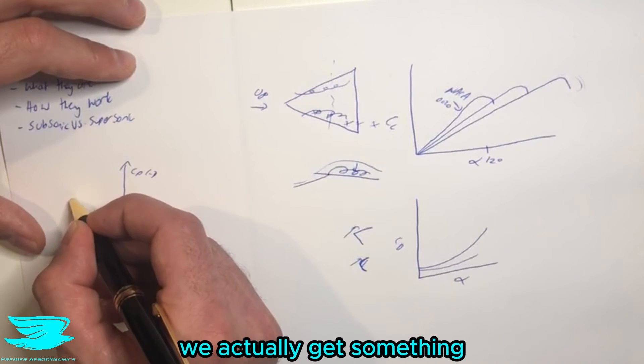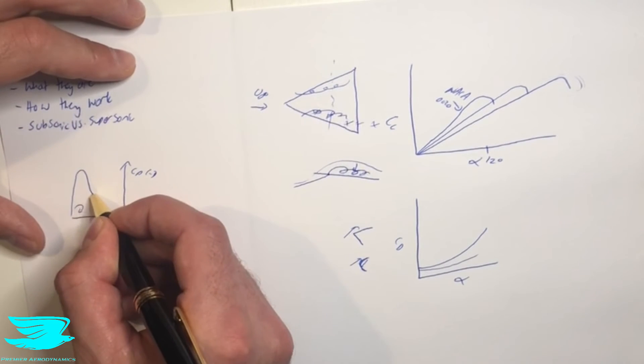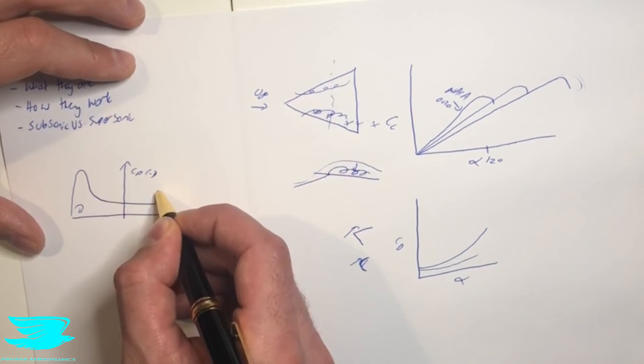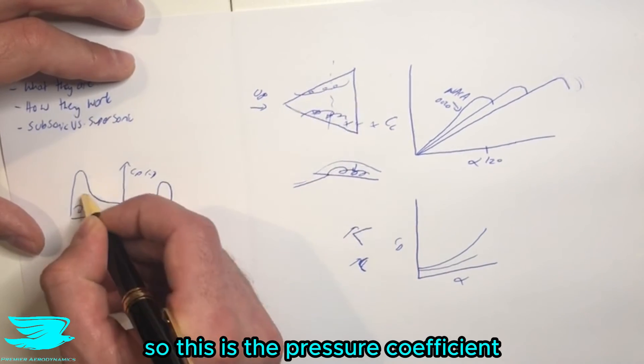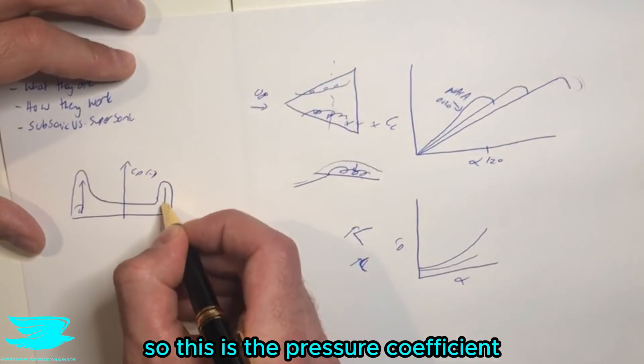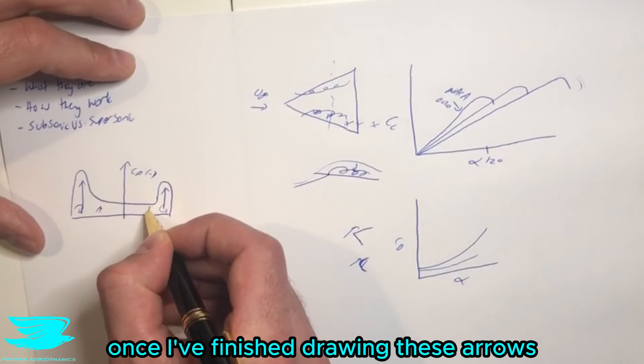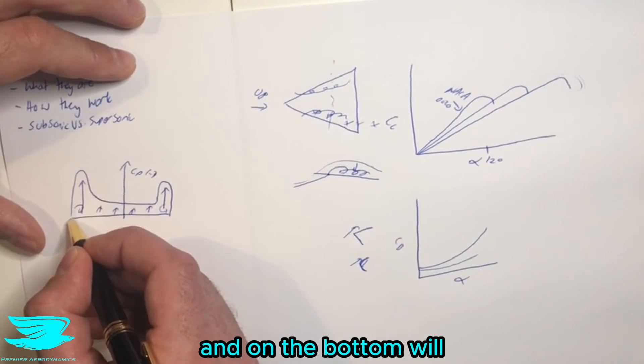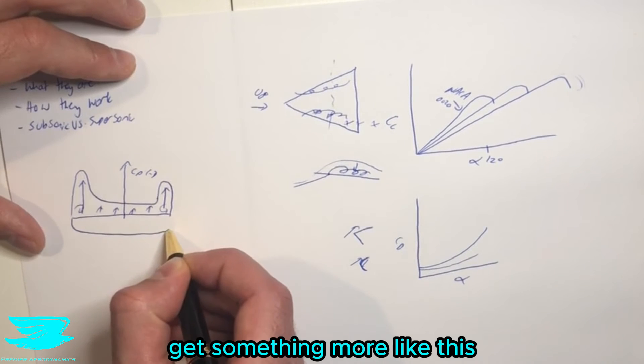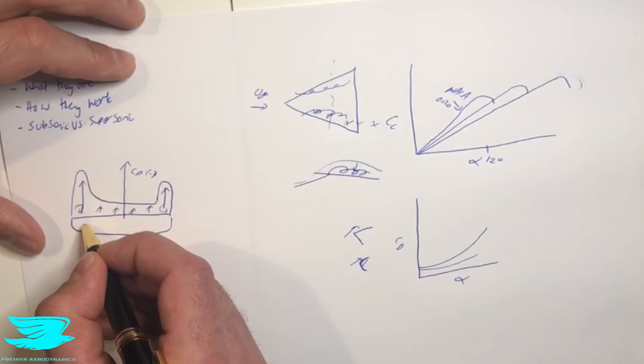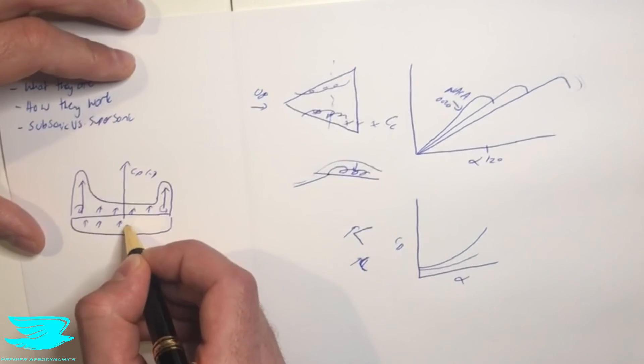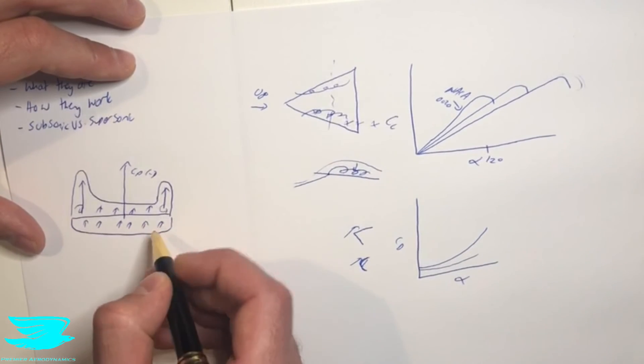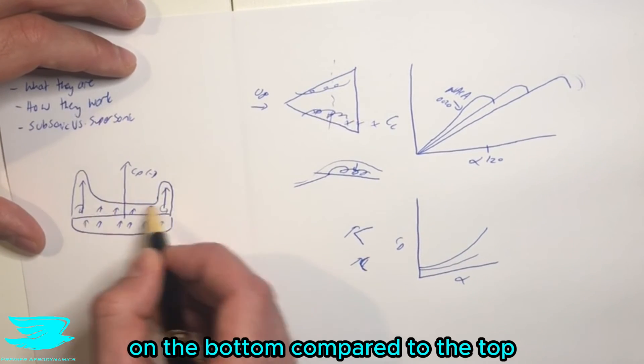So on the top surface, we actually get something that looks like this. So this is the pressure coefficient, and I'll explain what this means in a second once I've finished drawing these arrows. And on the bottom, we'll get something more like this.